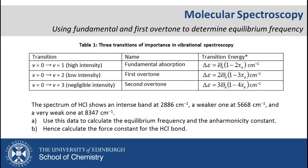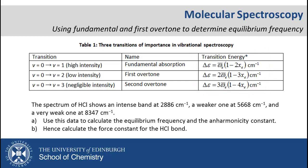We can see that the expressions for the transition energy include both the equilibrium oscillation frequency, omega bar e, and the anharmonicity constant, xe. Therefore, if we can experimentally measure at least two of the transitions, we can determine these quantities using simultaneous equations.